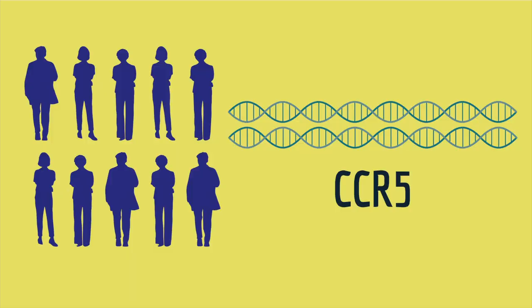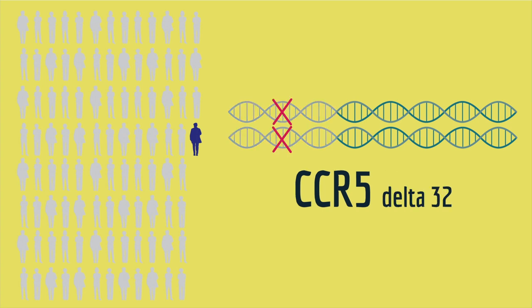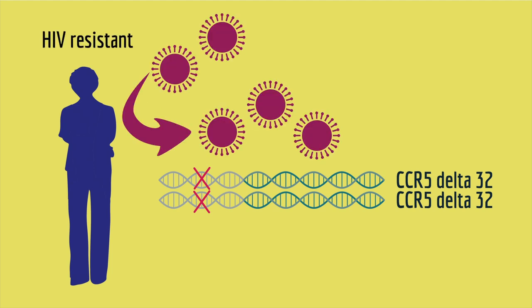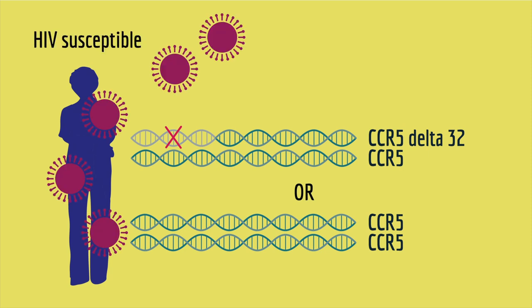We all have a gene called CCR5, and about 1% of the population has a variant of the gene that has a 32 base pair deletion. If both of your copies of CCR5 have that deletion, then you are resistant to HIV. But if you have just one of the longer variants, you are susceptible to infection by HIV.